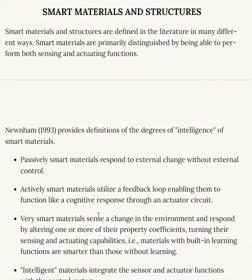Smart materials and structures are defined in many ways in the literature. Smart materials are primarily distinguished by being able to perform both sensing and actuating functions. The degree of intelligence varies: a passive smart material responds to external change without external control; an actively smart material utilizes a feedback loop enabling cognitive response through an actuator circuit; and a very smart material senses a change in the environment and responds by altering one or more of its property coefficients, tuning its sensing and actuating capabilities — meaning materials with built-in learning functions are smarter than those without.